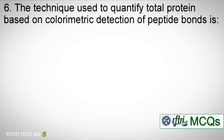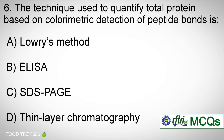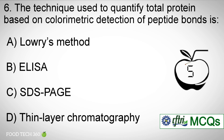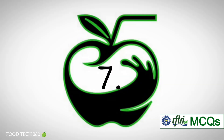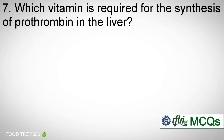Question number six: the technique used to quantify total protein based on colorimetric detection of peptide bonds is — options: a) Lowry method, b) ELISA, c) SDS-PAGE, d) Thin layer chromatography. Correct answer: a) Lowry method.